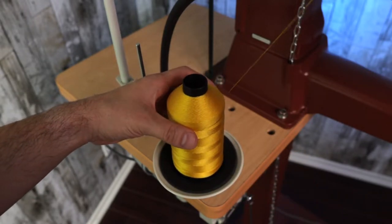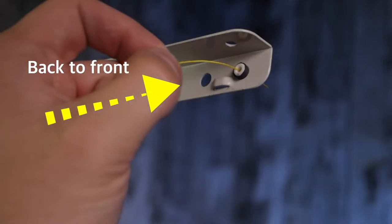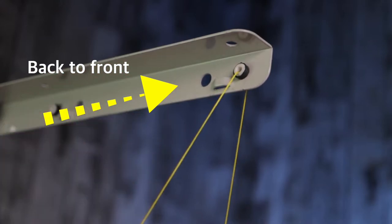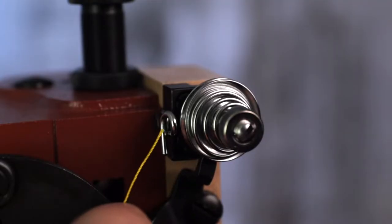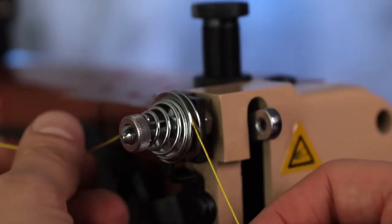Begin by inserting the thread through the thread stand from the back to the front. Insert the thread through the thread guide, and you want the tension discs to click as you pull the thread in between them.